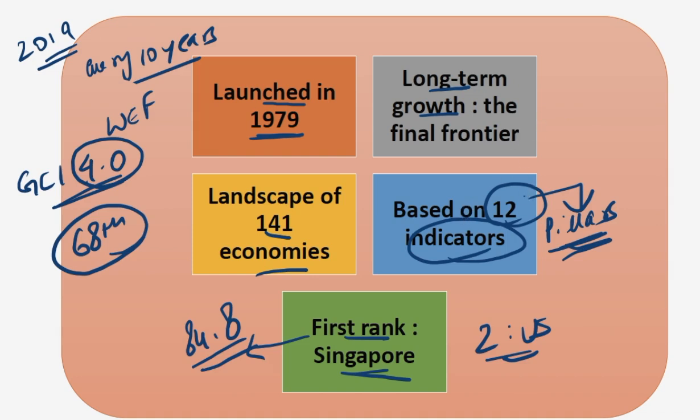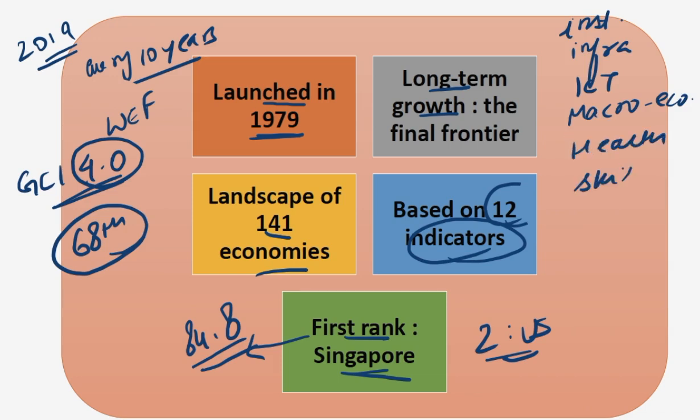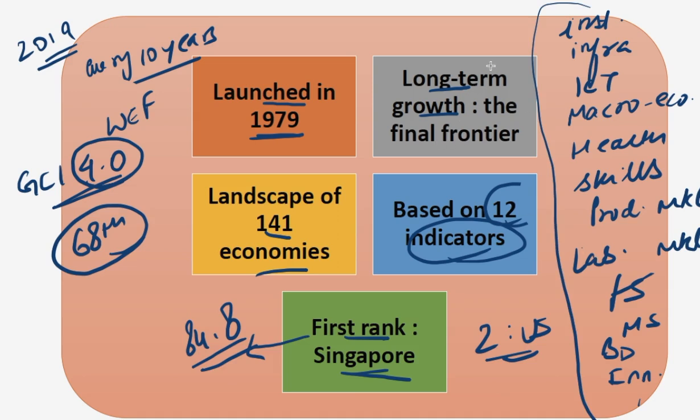If we talk about these 12 pillars: first is institutions, second is infrastructure, third is ICT adoption, fourth is macroeconomic stability, then we have health, skills, finance, product market, labor market, financial system, market size, business dynamism, and lastly innovation capability. So based on these 12 themes GCI is prepared.